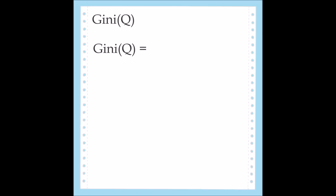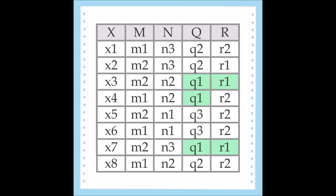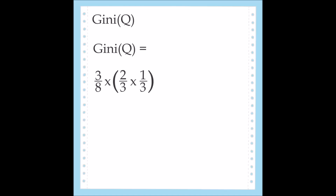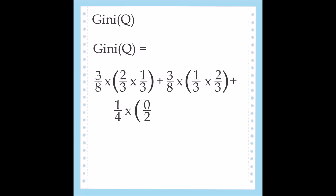After completing the equation for N, we move on to calculating the Gini value for Q. Since the calculation used for Q is the same as the one used for M and N, I will be speeding up a bit. If you would like, this is a good place to pause the video and work out the Gini value of Q yourself. After working it all out, the Gini value of Q is 1 over 6, the same as the Gini value of N.